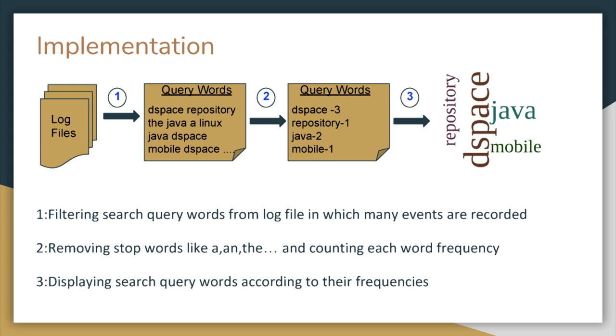Let's see the example. These are the words which are extracted from the log files after the first step. We have given a stop word list. From these query words, the stop words such as 'a' and 'the' are eliminated. The frequency of each word is counted and a key value pair of search query and the associated frequency is generated.